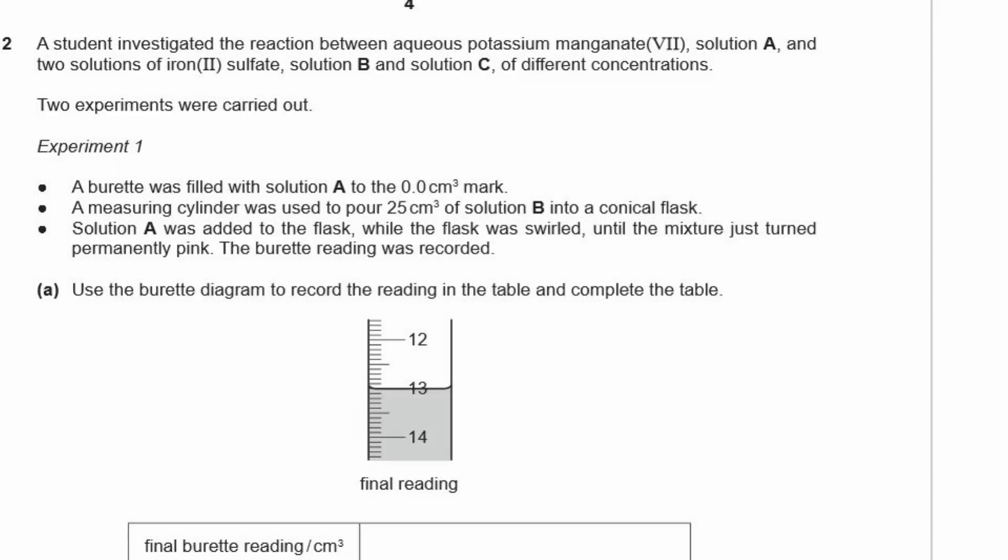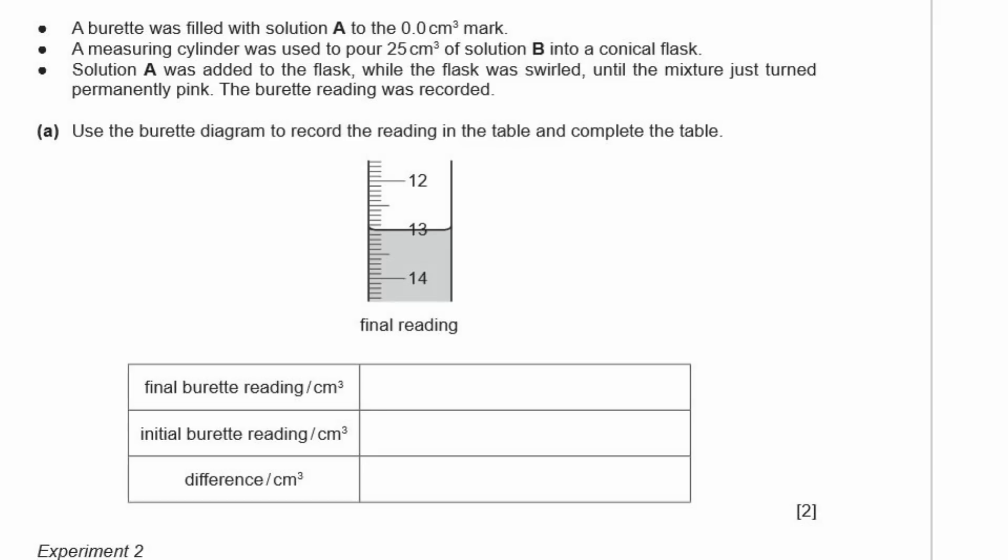A. Use the burette diagram to record the reading in the table and complete the table. Alright. So we know what the initial reading was. That was 0.0 centimeters cubed. But you don't write centimeters cubed in the table. You never write it in the cells because it's written over in the headings. It's always written in the headings. And reading this burette, you can see that there's, it just goes between 12 and 13. There's 10 gradations. So it's, each one is 0.1, but this is 13.0. If this one says here, 0.0, then this should have 13.0. It should always be decimal. And you can read to one decimal place anyway. And clearly the difference between 13.0 and 0 is 13.0 centimeters cubed.